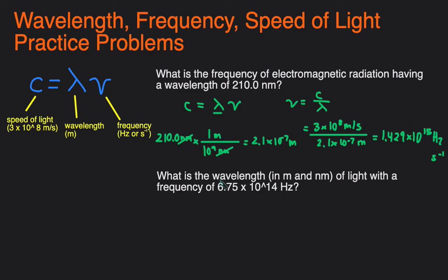So in the next example we're asked to solve for wavelength in both meters and nanometers of light with a frequency of 6.75 times 10 to the 14th Hertz.